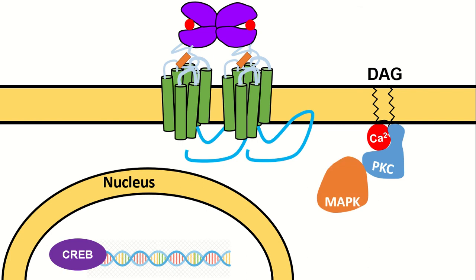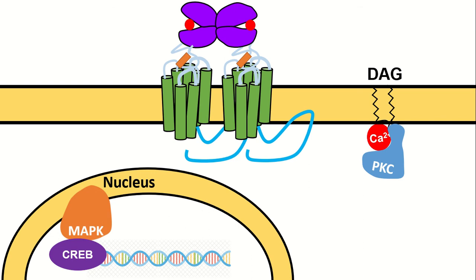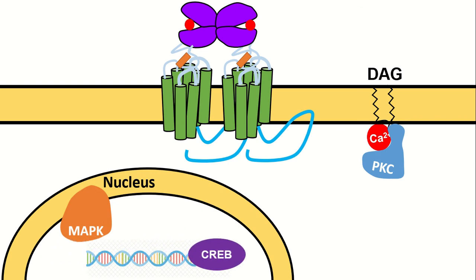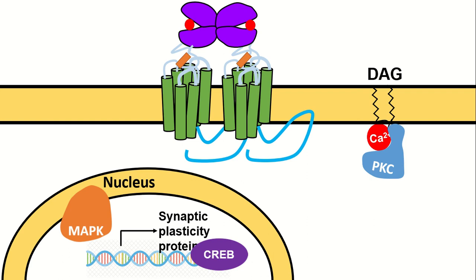PKC then activates MAPK via phosphorylation. MAPK translocates to the nucleus and activates the transcription factor CREB, which transcribes several genes related to synaptic plasticity. Scaffolding proteins such as Homer and Shank tightly regulate both the localization and signaling of MGluR5.